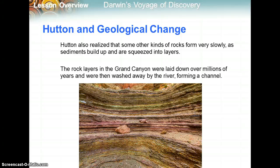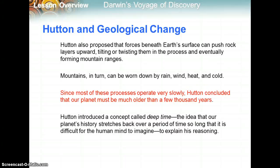The rock layers in the Grand Canyon were laid down over millions of years and then washed away by a river, forming a channel. Hutton also proposed that forces beneath Earth's surface can push rock layers upward, tilting or twisting them, eventually forming mountain ranges. Mountains in turn can be worn down by rain, wind, heat, and cold. Since most of these processes operate very slowly, Hutton concluded that our planet must be much older than a few thousand years. He introduced the concept of deep time — the idea that Earth's history stretches back over a period so long it is difficult for human minds to imagine.